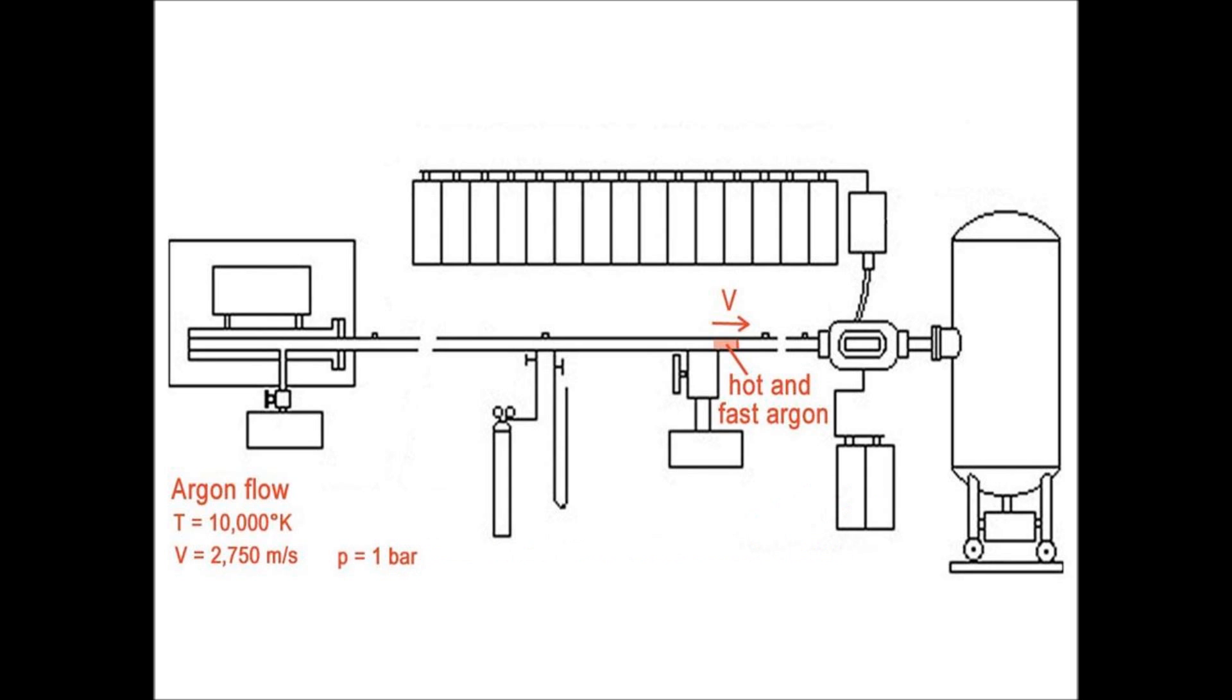Well, here you have the parameters of the argon flow. The gas temperature was 10,000 degrees Kelvin. The velocity was 2,750 meters per second. And the pressure of the gas was one bar.